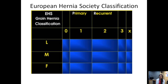The European Hernia Society classification uses L, M, and F standing for lateral, medial, and femoral. Zero indicates no defect; 1, 2, and 3 refer to size in finger breadths — one, two, or three finger breadths — where each finger breadth is approximately 1.5 centimeters. There are separate columns for primary and recurrent hernias.